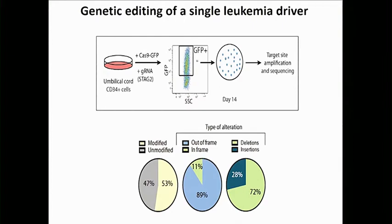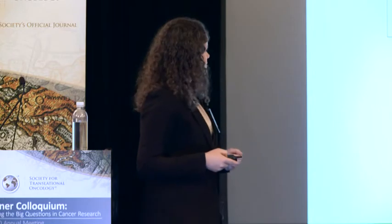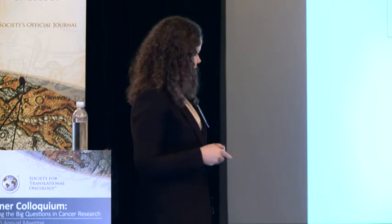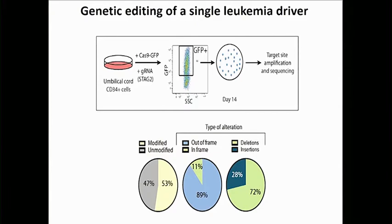What we observed was that most of the colonies we picked had modification of the STAG2 locus. This modification was a particular deletion or insertion predicted to result in loss of function — it was out of frame — and for this particular guide these were mainly deletions, but there was clearly a wide heterogeneity of lesions introduced.